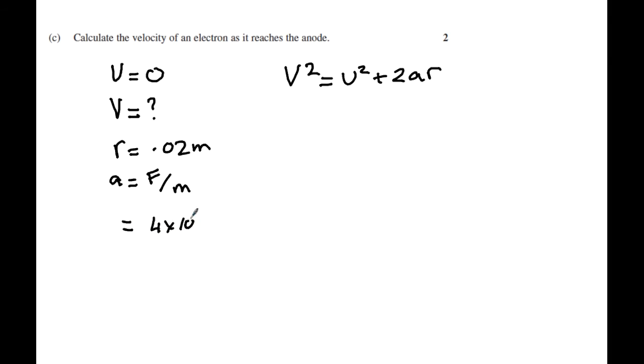But before we continue let's work out a first. F we just determined in the previous question which is 4 by 10 to the power of negative 14, the mass of the electron is of course 9.1 by 10 to the power of negative 31, and when we calculate that out we get the acceleration of our electron as 4.4 by 10 to the power of 16 meters per second squared.